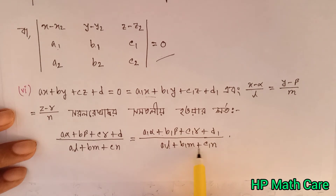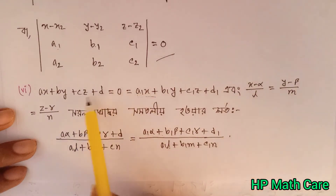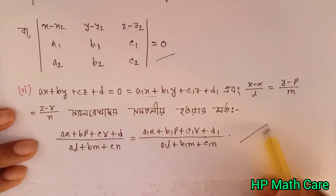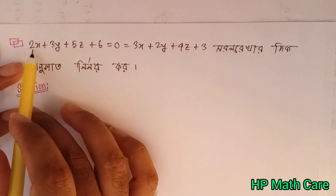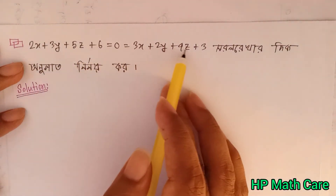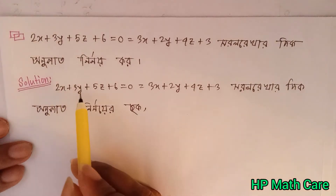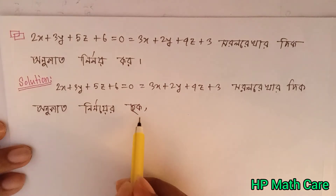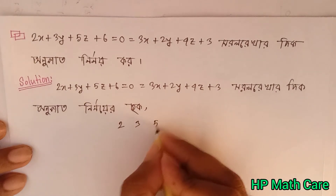For perpendicular lines: A1L plus B1M plus C1N equals zero. Now let's see the procedure on an example. We have 2x plus 3y plus 5z plus 6 equal 0, and 3x plus 2y plus 4z plus 3 equal 0. So this gives us 2x plus 3y plus 5z plus 9, and 2y plus 3z plus 3.